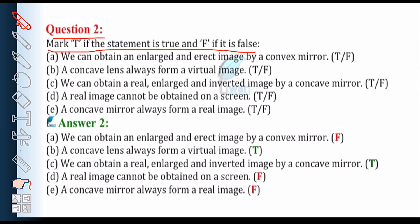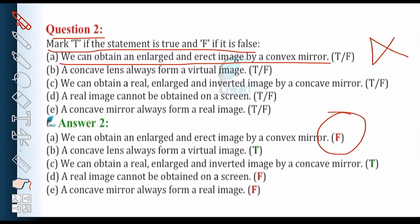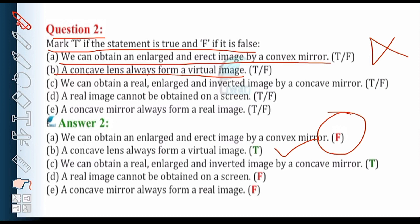Question number 2: mark T if the statement is true and F if the statement is false. First part — we can obtain an enlarged and erect image by a convex mirror. This statement is false. Second — a concave lens always forms a virtual image. This statement is absolutely correct because the image formed by a concave lens cannot be obtained on a screen.